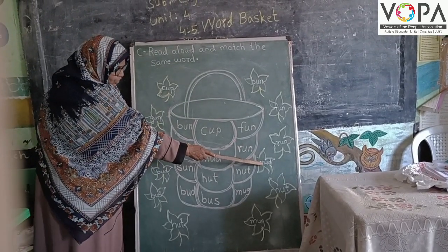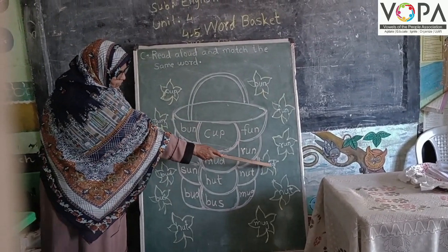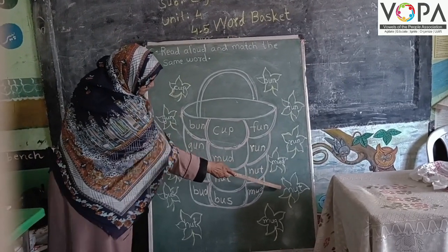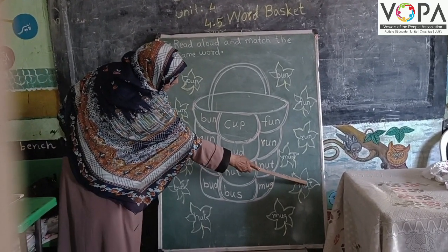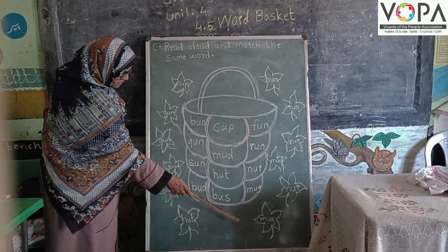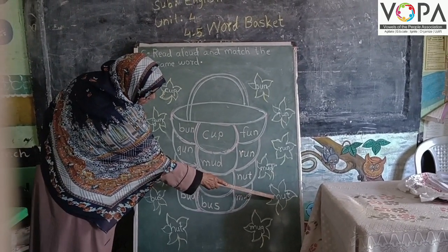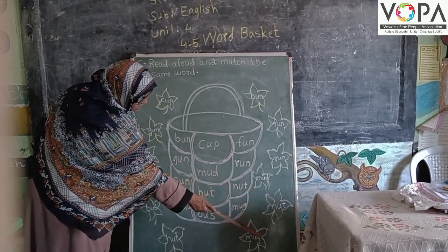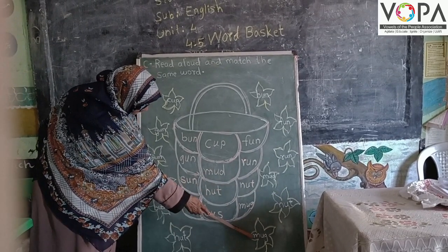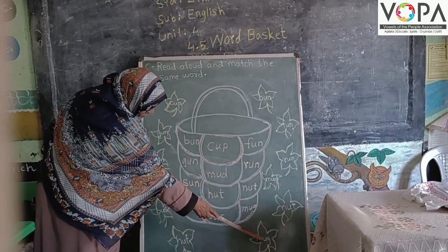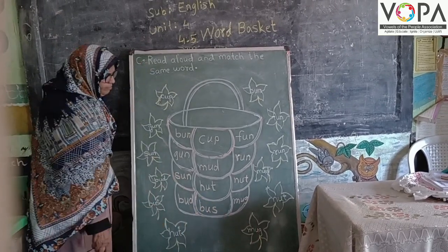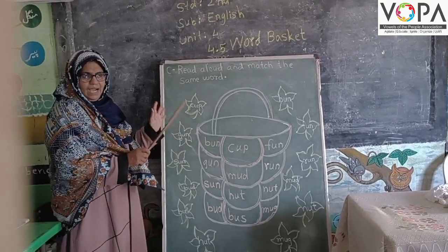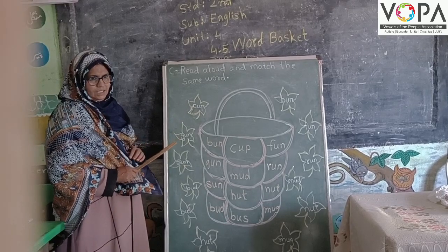M, U, P, D — Nut. M, U, P, D — Nut. M, U, G, D — Mug. Now we have to study the basket outside of the letters which are written in full. Now we will study the word in the basket.